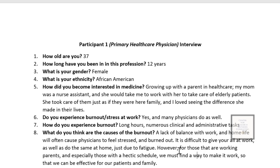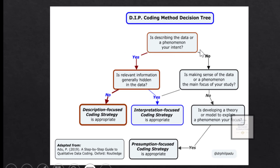Going back to the decision criteria: is describing the data your intent? Yes — we want to describe the causes and solutions of burnout. Is relevant information generally hidden in the data? No — the information is right there. Because it's not hidden, description-focused coding is best. If the information were hidden and you had to make sense of responses, interpretation-focused coding would be better. If you wanted to develop a theory or explain a phenomenon, presumption-focused coding would apply. In this case, description-focused coding is the best strategy.